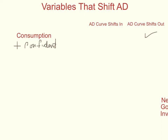Another example of something that might shift consumption is interest rates. If interest rates go up, that makes money harder to get. Car loans have higher interest rates, mortgages have higher interest rates, credit cards have higher interest rates. People are going to be a little bit less likely to go out and spend a lot of money and rev up the economy. So with higher interest rates, the AD curve shifts in.